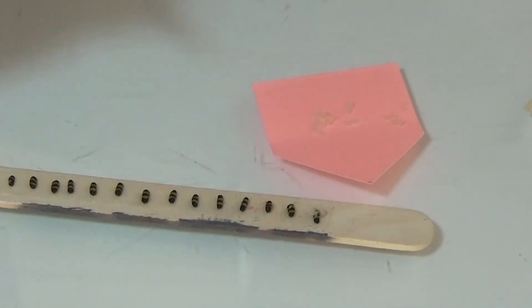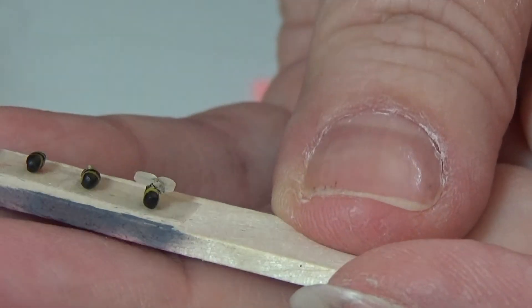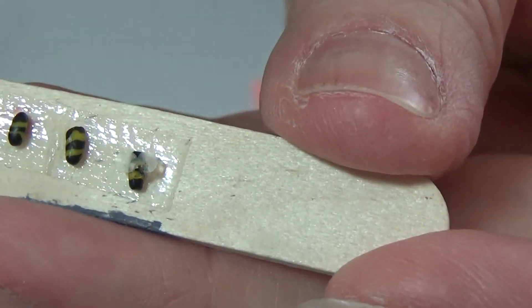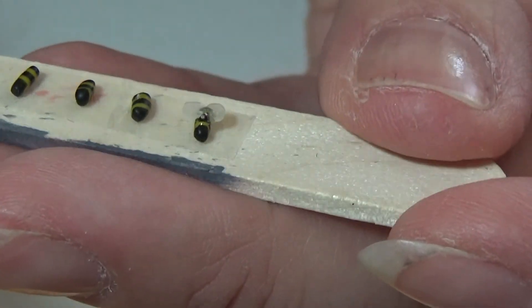And there I have a done bee. See if I can show you, right there with the wings. So all you need to do now is let it dry and you have a tiny bee with tiny wings on.